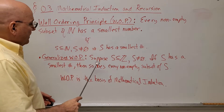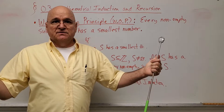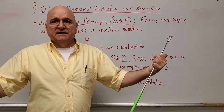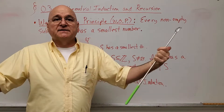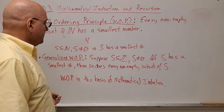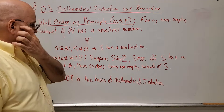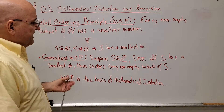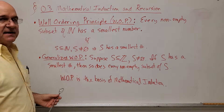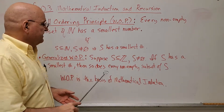The generalized well ordering principle says: suppose S is a subset of the integers — so now it can go without bound in either direction, positive or negative — and it's not empty. Here's the kicker: if S has a smallest number, then so does every non-empty subset of S.